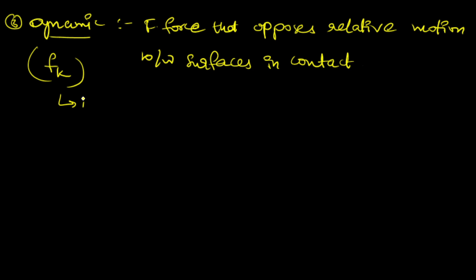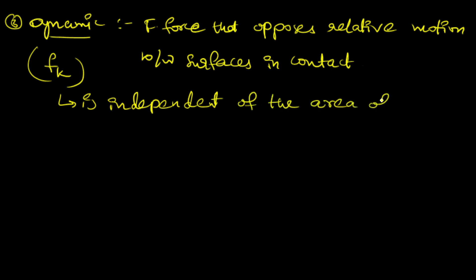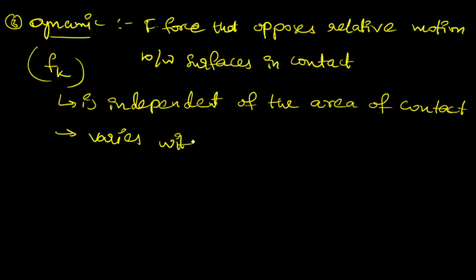Dynamic friction, also called kinetic or sliding friction, is the friction which opposes relative motion between surfaces in contact, denoted with Fk. This kinetic friction is independent of the area of contact, and it varies with the normal force.